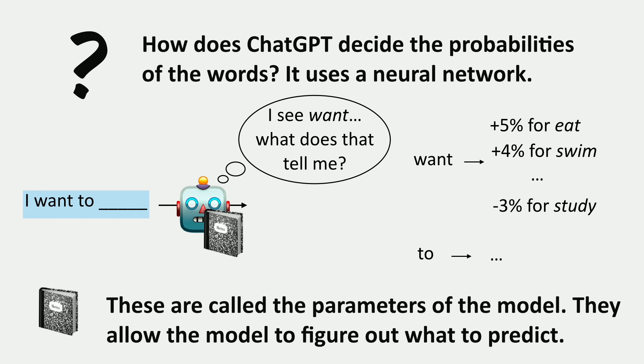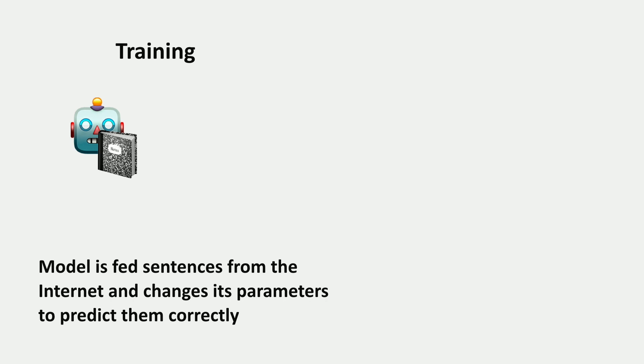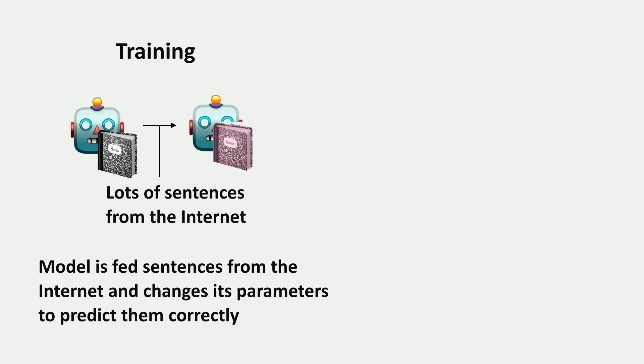Where do we get these numbers from? How do we set the values of these parameters? This is the training process. These models are trained by being fed a whole bunch of sentences taken from the internet, and the model tries to change its parameters in order to predict them correctly. Through that process, it takes an initial set of parameters that are maybe not so good and learns better ones, so it does a better job at prediction.